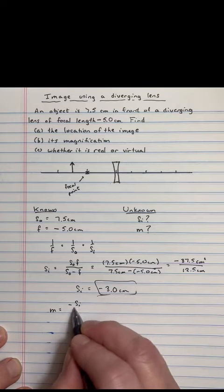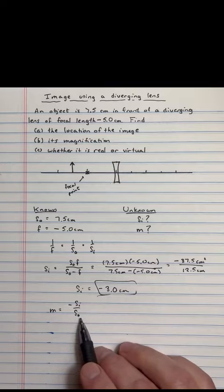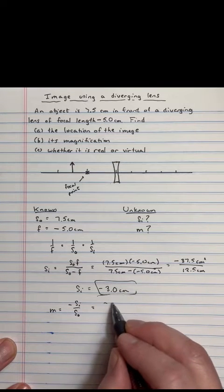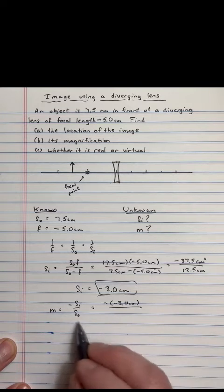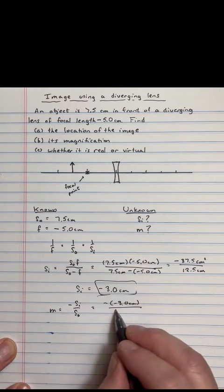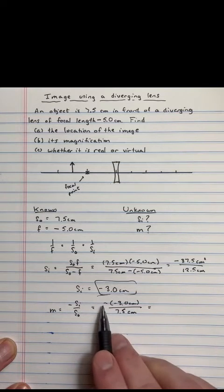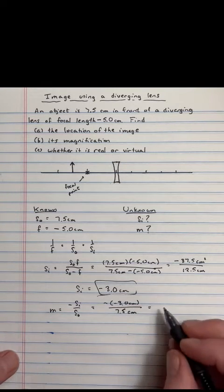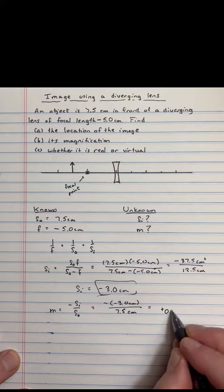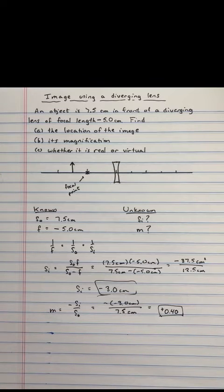What about magnification? How large can we expect the image to be compared to the original object? Well, the formula also is still the same. Magnification is a negative SI over SO. Well, then a negative of a negative 3 centimeters here, and a positive 7.5 centimeters for the object distance.